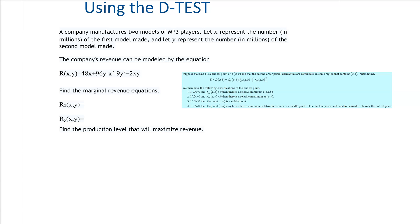Alright, so the first thing we need to do here is find the marginal revenue equations, which is just getting the first derivative of these. So our first derivative with respect to x is going to be 48 minus 2x minus 2y. Our derivative with respect to y is 96 minus 18y minus 2x.